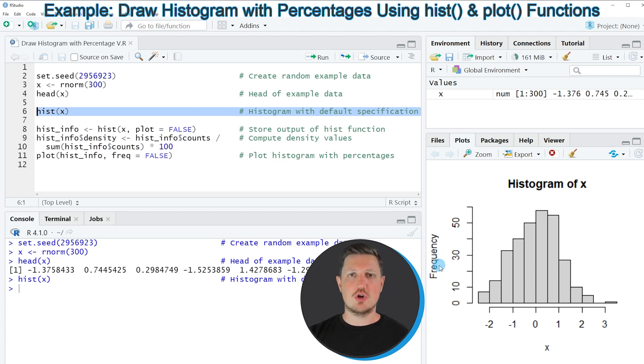So let's assume that we want to show these bars of the histogram based on percentages. Then we can apply the code that you can see in lines 8 to 11.